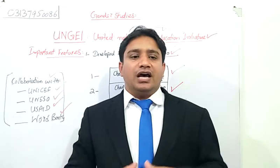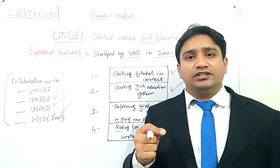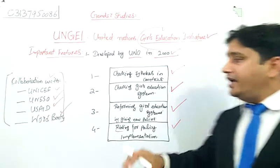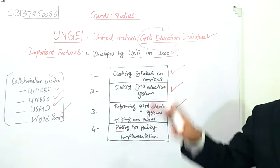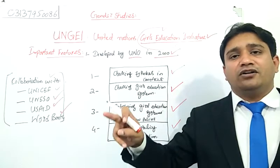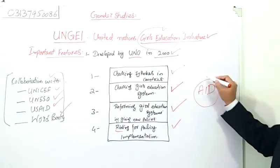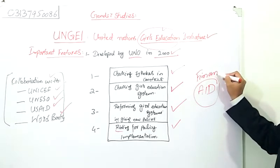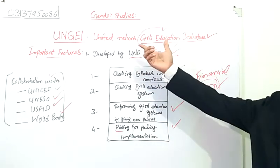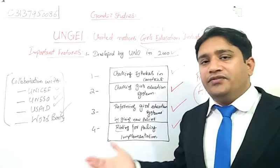Such policies are analyzed by UNGEI and then a final report is submitted to the relevant government of the country they are visiting. They then recommend that the government should reform its education policies relating to girls' education for the betterment of women development. Financial aid is the main tool to implement any policy, and the United Nations also provides financial aid to implement their policies in different countries all over the world.